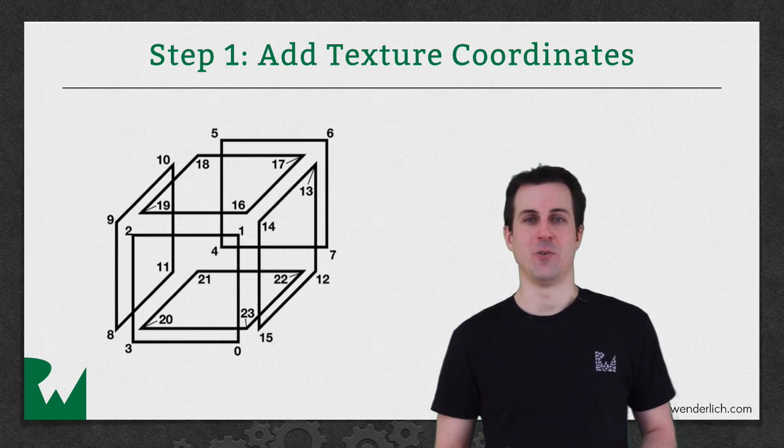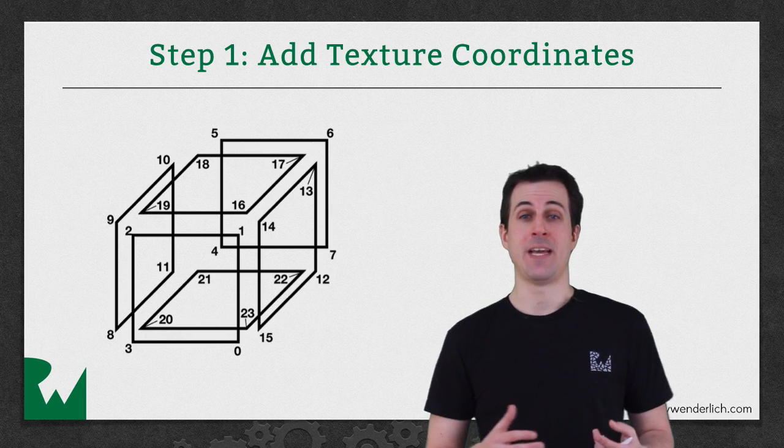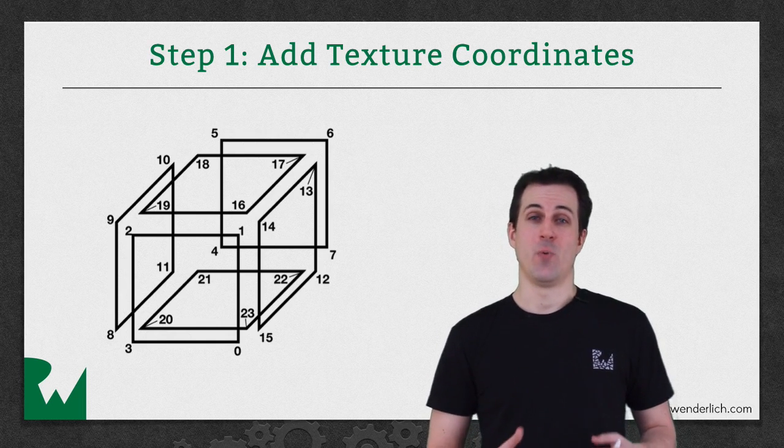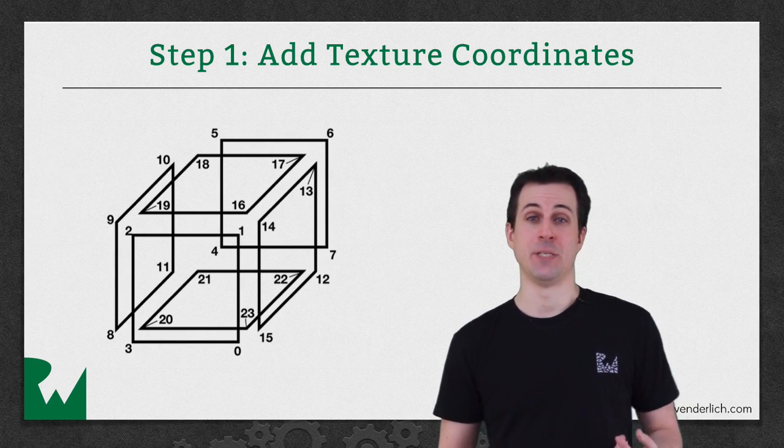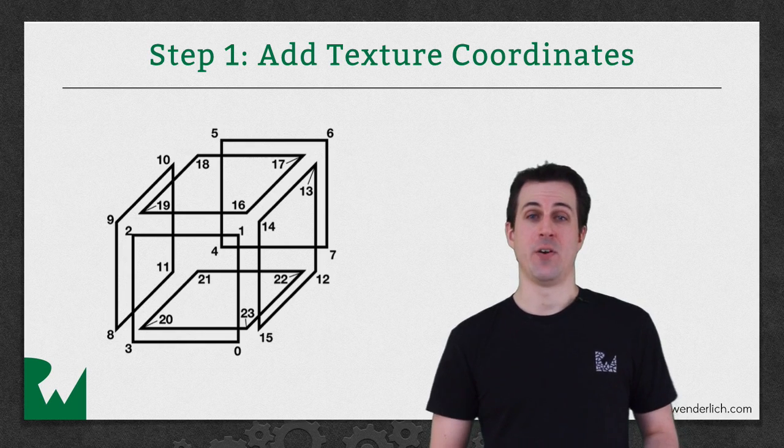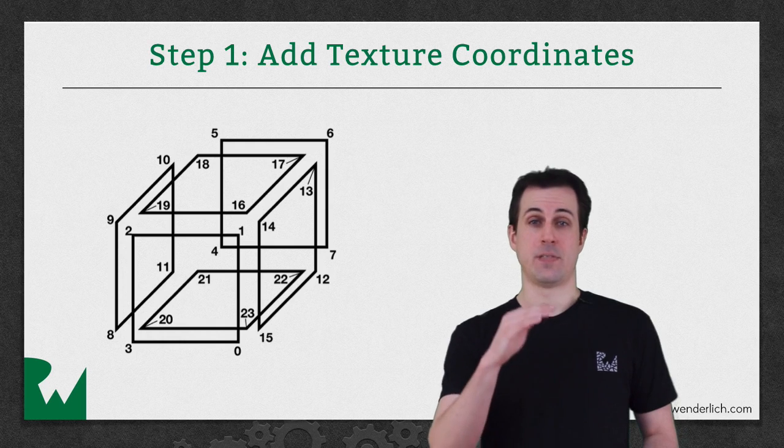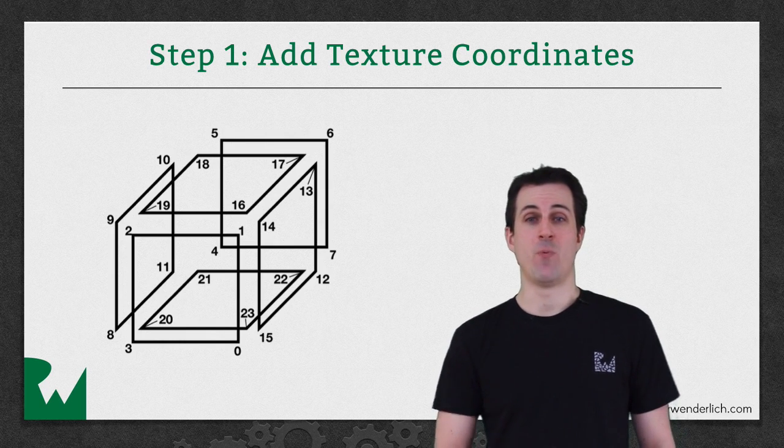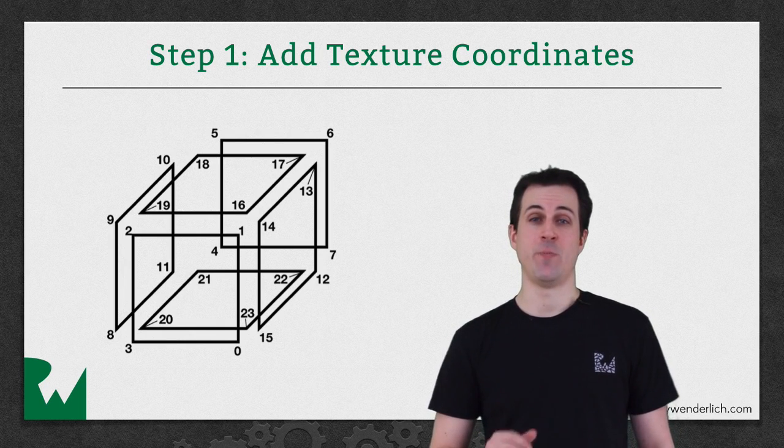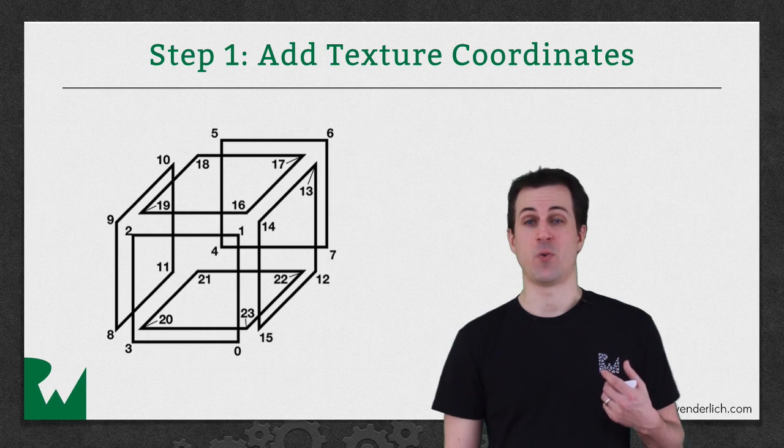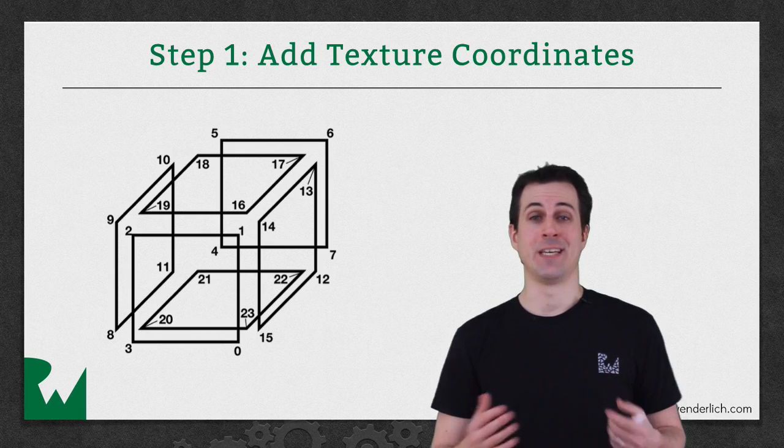Earlier in this series, we converted our project to use index drawing rather than array drawing. And one of the goals of this was to reuse some data that was the same between vertices. Well, we can't do that necessarily with texturing because the data isn't exactly the same between vertices that are in the same position anymore. What I mean by that is there can be the upper left corner of the front face here. It shares the position with the top face of this cube as well. But we might want different texture coordinates between the front face and the top face. For example, for the front face, we might want that vertex to be the upper left corner of the RW logo. But for the top face, we might want it to be the lower left corner of the RW logo.